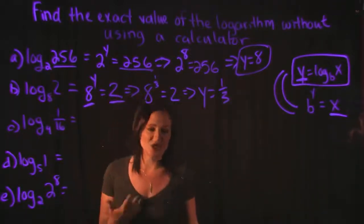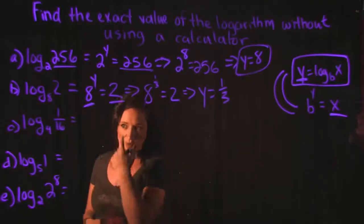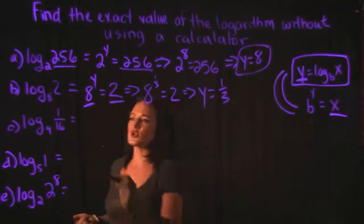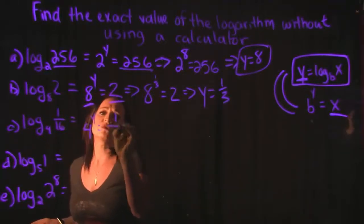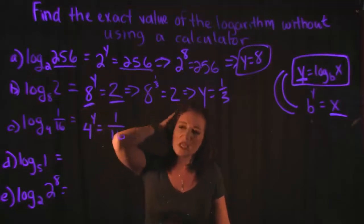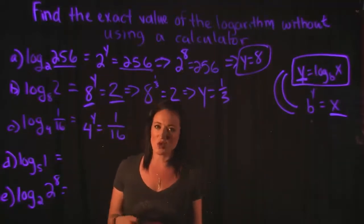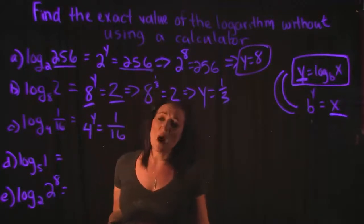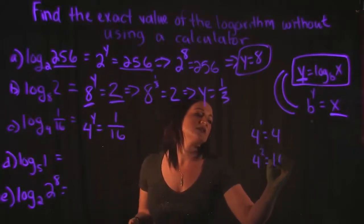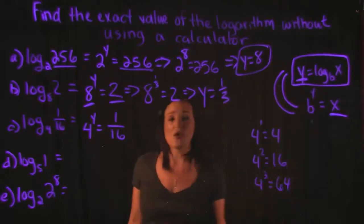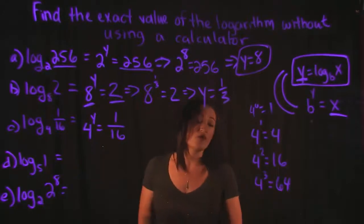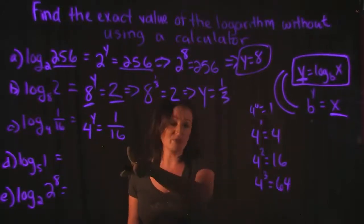You might have to do a little finagling with numbers, but they are very doable. For Example C, log base four of one over sixteen: converting to exponential form gives us four to the Y equals one over sixteen. We want a base of four to equal one over sixteen, which is smaller. Four to the first is four, four to the second is sixteen, four to the third is sixty-four — they just get bigger. Four to the zero is one, which is still too big for one over sixteen.